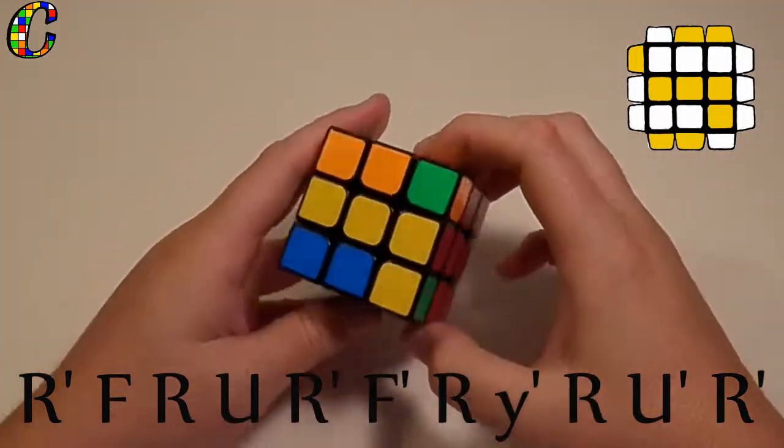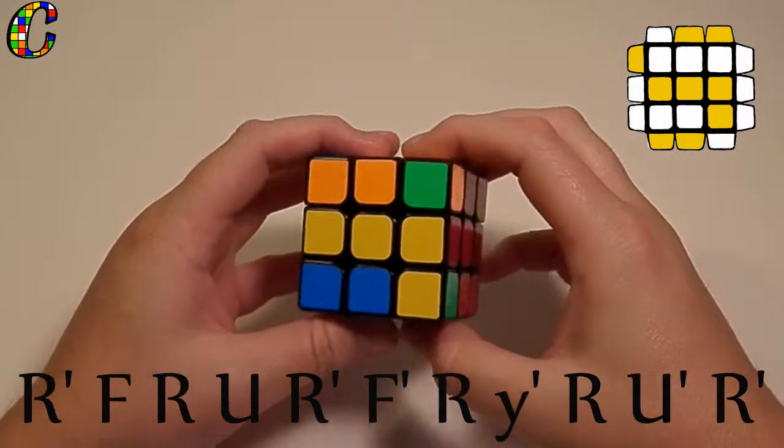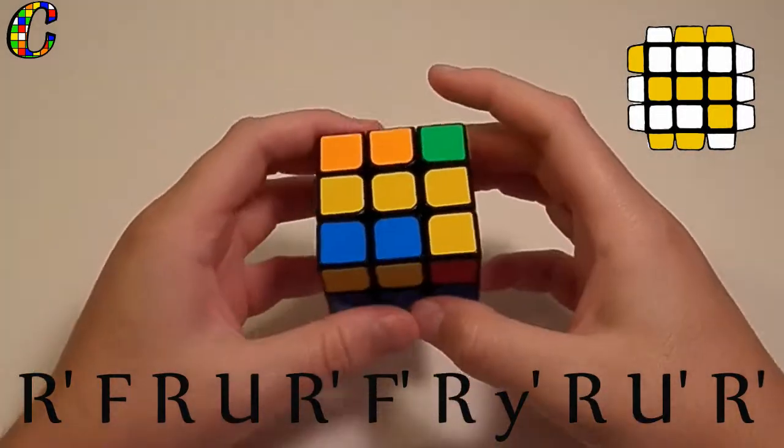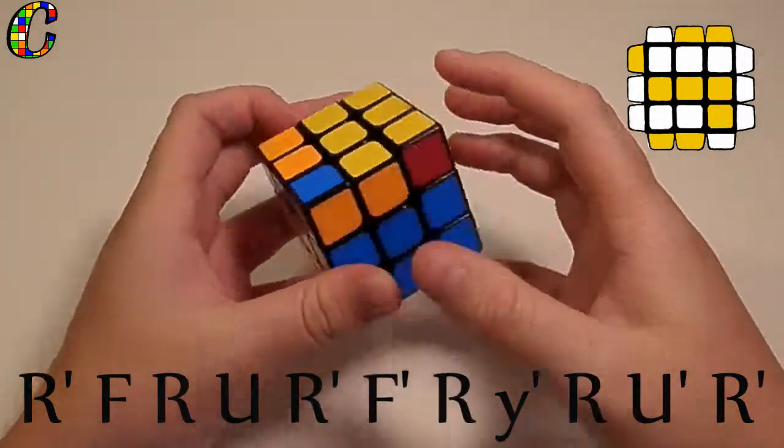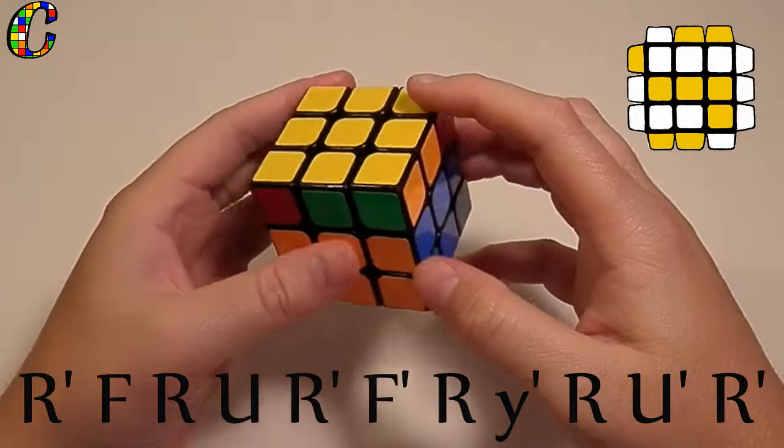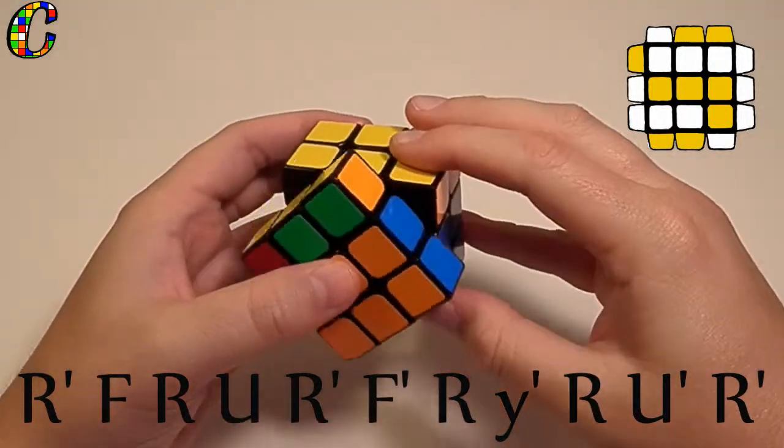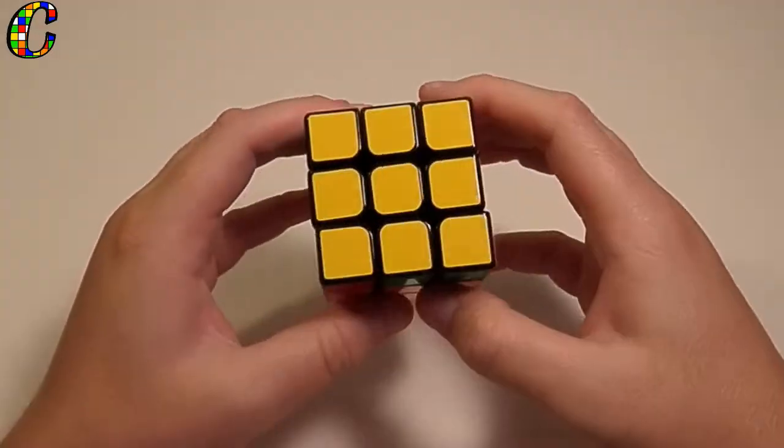Now as you know, most of these OLLs are pretty new to me, I'm just learning them as we go along, but this is how I execute this case. I use my thumb to push up on that F' about halfway through the algorithm, and that works for me.